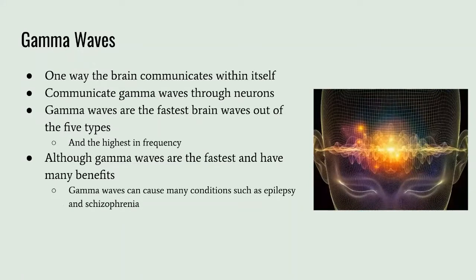Gamma waves are a way that the brain communicates within itself, transmitted through neurons. They are the fastest brainwaves out of all types and have the highest frequency. Gamma waves have many benefits but can also cause conditions like epilepsy and schizophrenia.